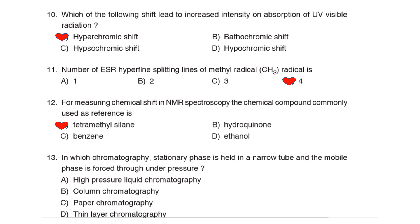13th Question: In which chromatography is the stationary phase held in a narrow tube and the mobile phase is forced through under pressure? Correct Answer: Option B: Column chromatography.